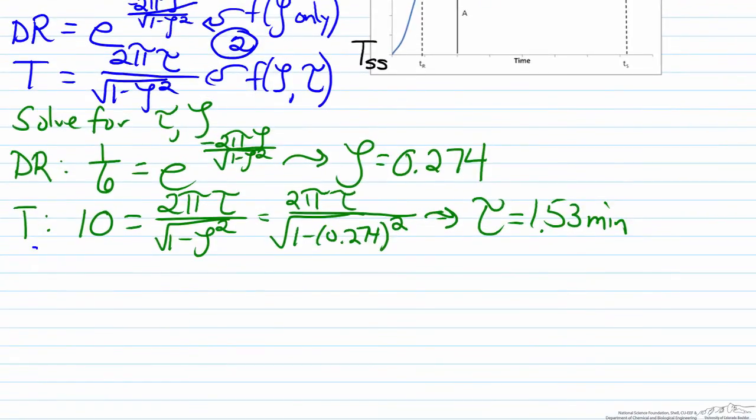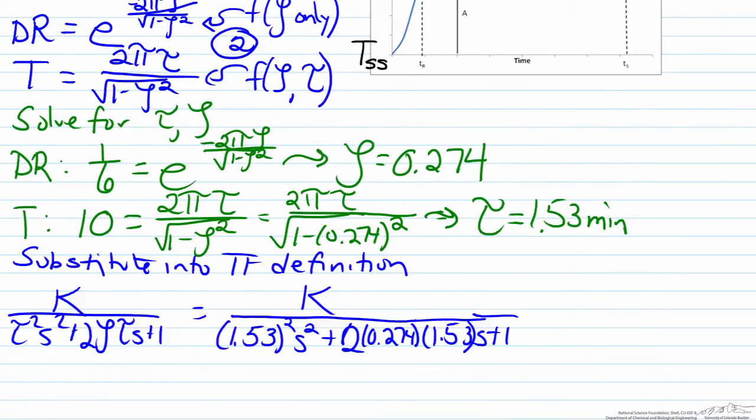So we can now substitute into the transfer function definition. So before we substitute this out, what we now want to do is think about what does k equal? The definition of k would be delta output over delta input. And what we saw was we made a three degree change in the input, and if the process had no offset between what the temperature should be and what it actually is, then that indicates that this delta output is also three degrees. So therefore our gain here is just one.